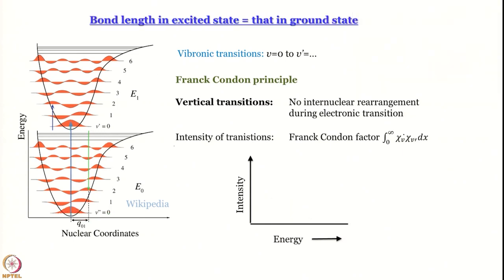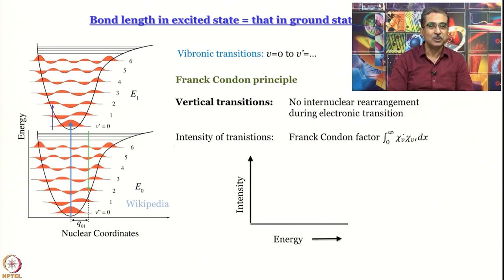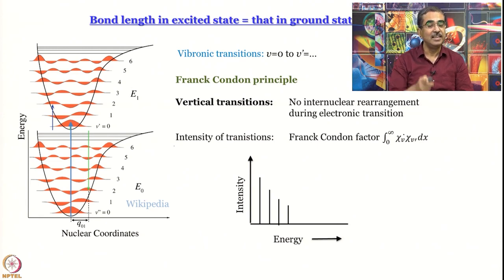Now let us consider the situation where the bond length in the excited state is equal to that in the ground state. Obviously, the transition with the largest Franck-Condon factor will be the 0–0-dash transition. So as you go higher up in energy, the vibronic lines become smaller and smaller in intensity. This is the situation in naphthacene, which is the spectrum we saw in the previous module.